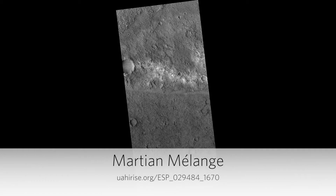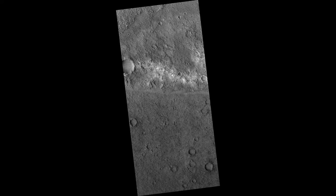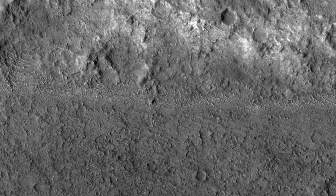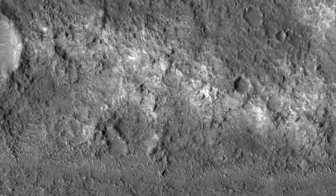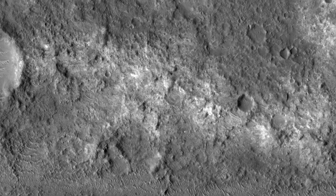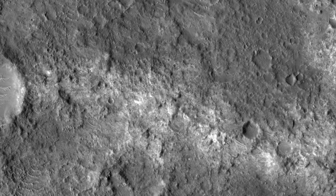Martian melange. Melange means a confusing mixture and is used to describe rock scraped off the top of a downward-moving tectonic plate in a subduction zone on Earth. On Mars, it is probably mostly impact cratering that creates such a chaotic mixture of rock types rather than plate tectonics.